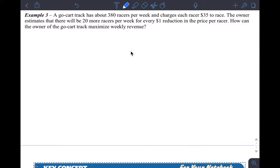So it says a go-kart track has about 380 racers per week and charges each racer $35 to race. The owner estimates that there will be 20 more racers per week for every one dollar reduction in the price per racer. How can the owner of the go-kart track maximize weekly revenue?